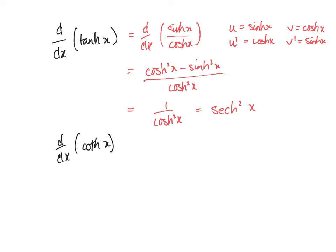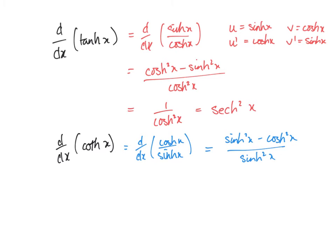Likewise, we can differentiate coth x with respect to x by writing that as d/dx of a quotient — cosh x over sinh x. When we apply v du/dx minus u dv/dx, this time we get sinh squared x minus cosh squared x, all divided by sinh squared x. Since cosh squared minus sinh squared is one, then sinh squared minus cosh squared is minus one. That gives minus one over sinh squared x, which is minus csch squared x.